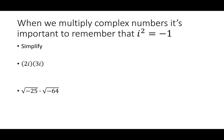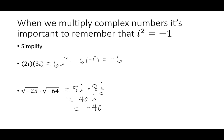When multiplying, remember that i squared is negative 1. For 2i times 3i: 2 times 3 is 6, and i times i is i squared, so 6i squared equals 6 times negative 1, which is negative 6. When multiplying expressions with negative radicands, convert first: the square root of negative 25 becomes 5i, and the square root of negative 64 becomes 8i. Then 5 times 8 is 40, times i squared is negative 1, giving negative 40. Always convert to imaginary form before multiplying.